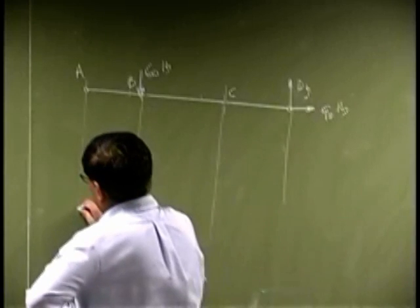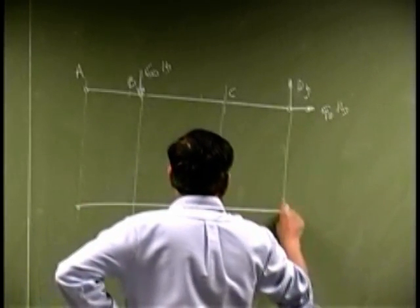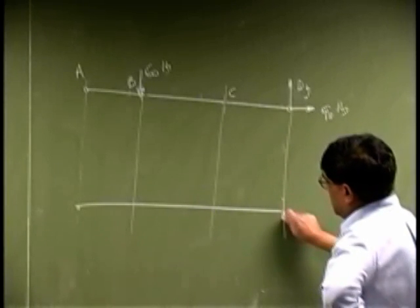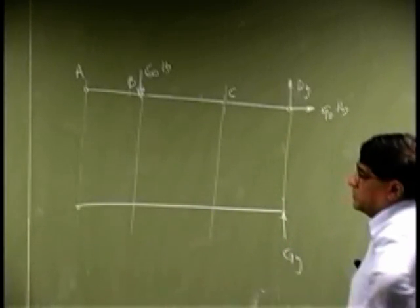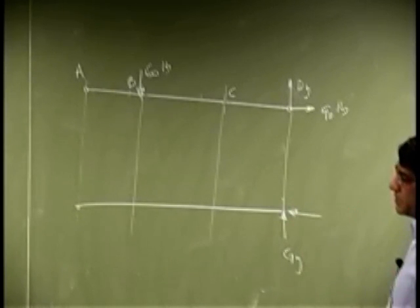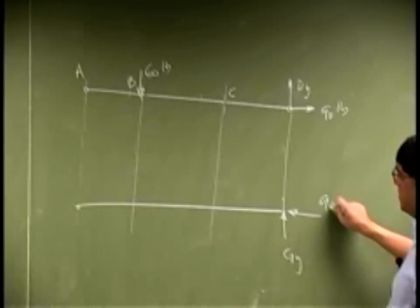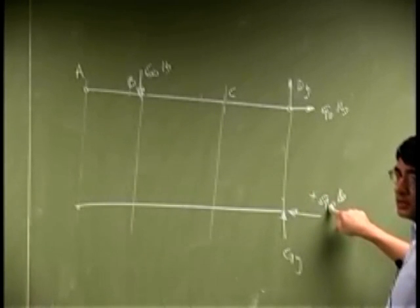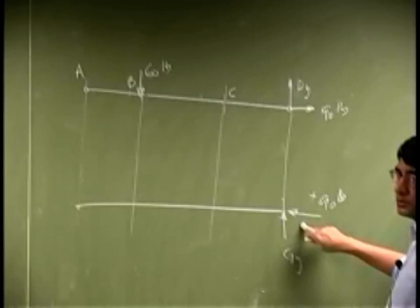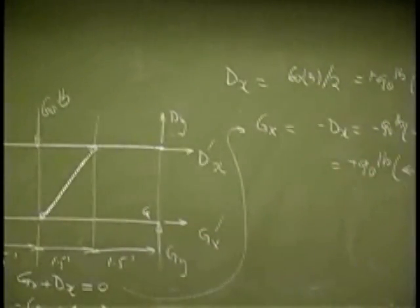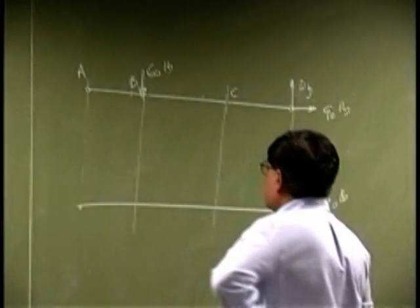Then we got the bottom member. The bottom member we do not know G_y, so we put it there the way it is. Then we found D_x and this is 90 pounds. You notice that I am using positive sign, so I change the direction. It is no longer going this way.